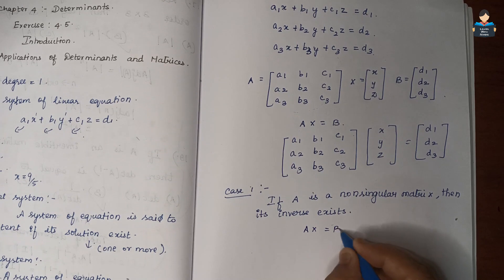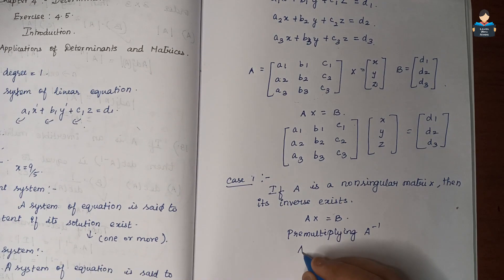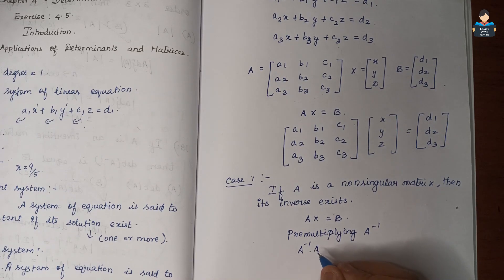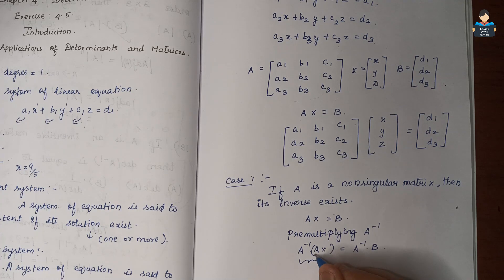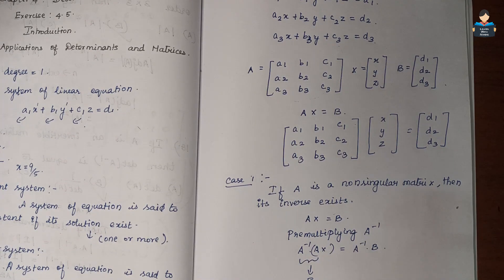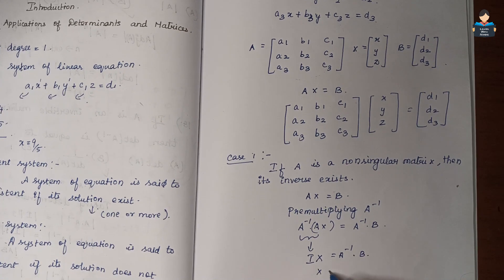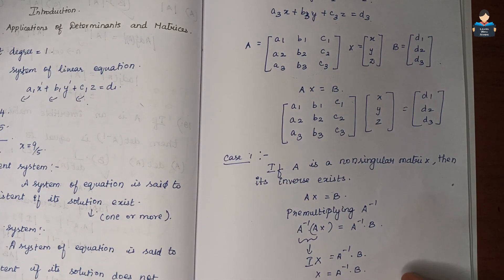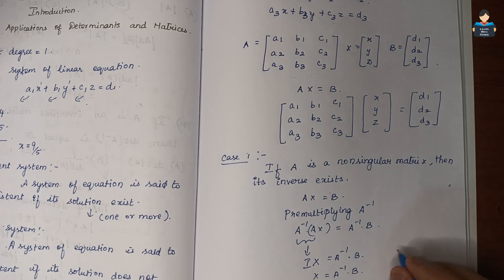So from AX = B, we multiply both sides by A inverse: A inverse into AX equals A inverse into B. Since A inverse times A equals the identity matrix, we get X equals A inverse times B. This is called the matrix method.